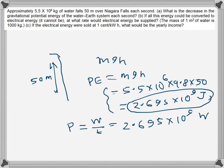So this is the electrical energy if it could be converted. Part c asks: if the electrical energy were sold at one cent per kilowatt-hour, what would be the yearly income? In order to do that, first we need to convert the energy in terms of kilowatts.